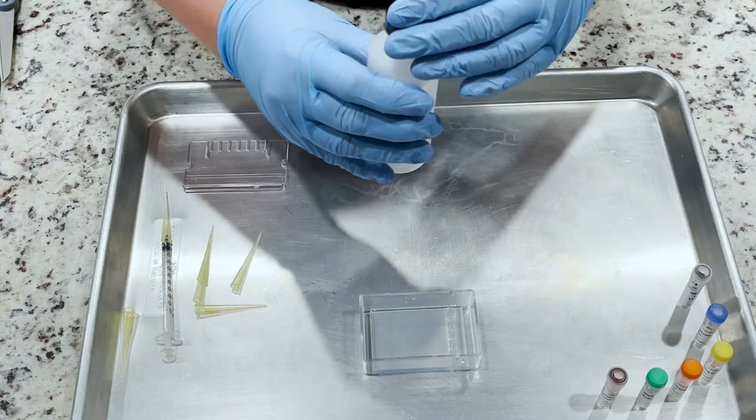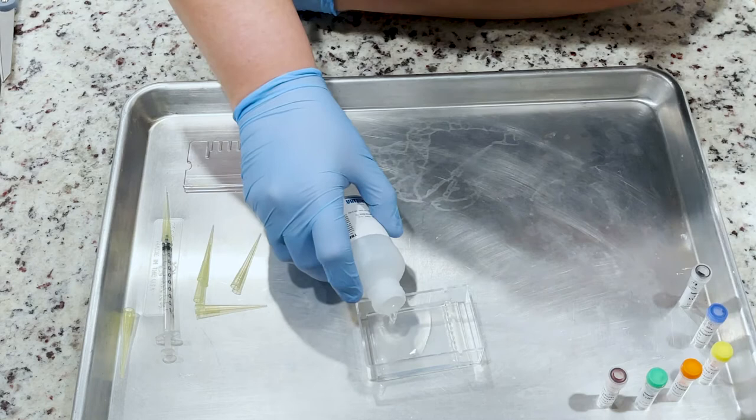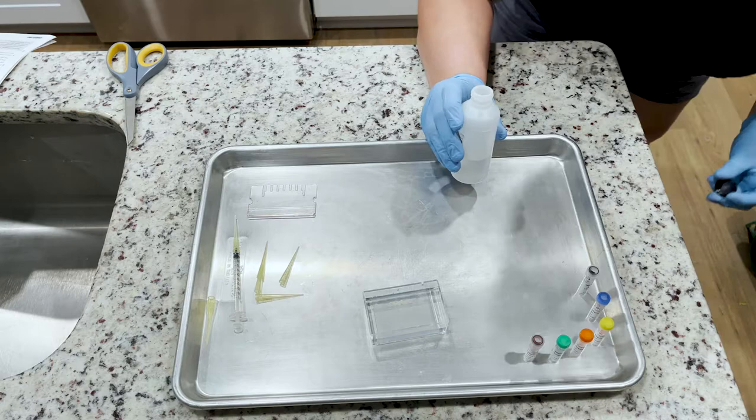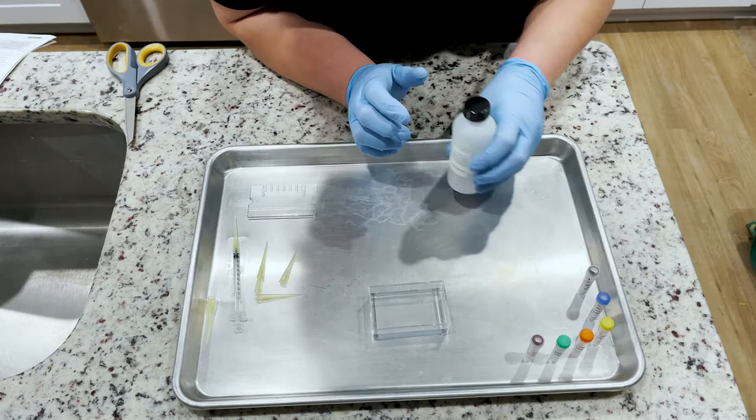Next, you want to take the buffer and pour it over the gel. You want to make sure that the buffer goes into those wells on the end that did not have the gel inside them. It should completely cover the gel, and I go a little bit over the gel maybe by a couple of millimeters.